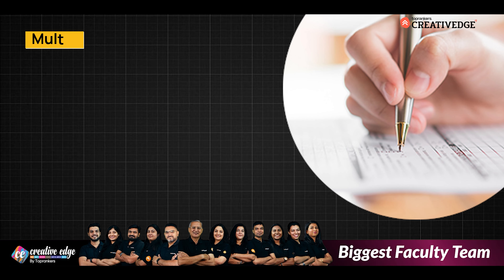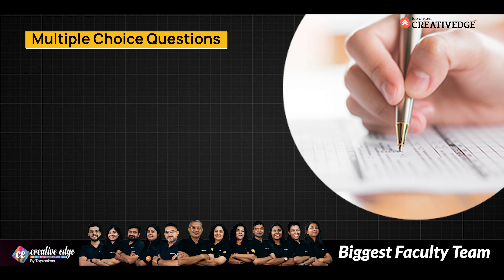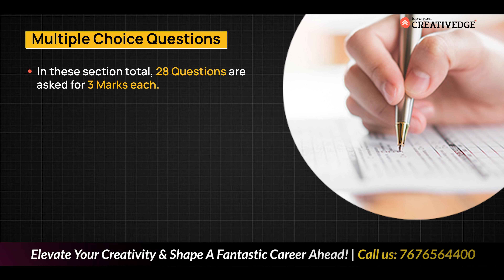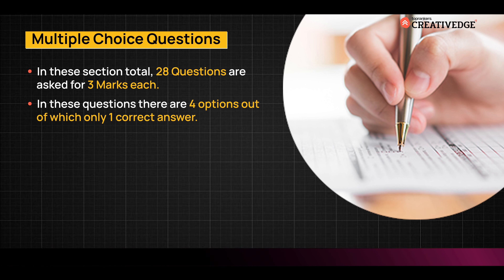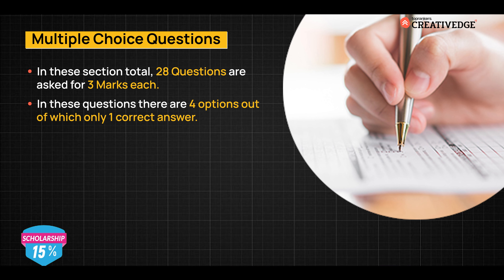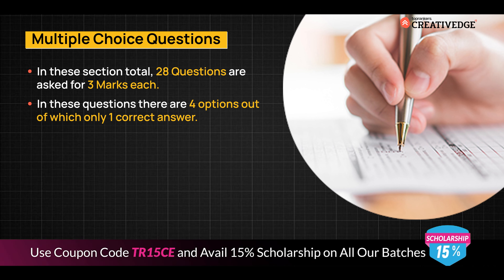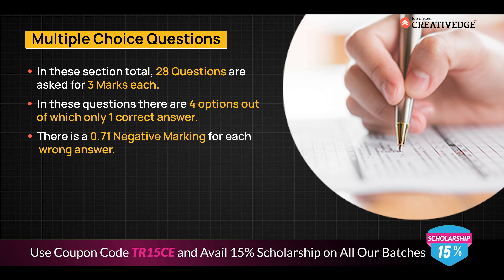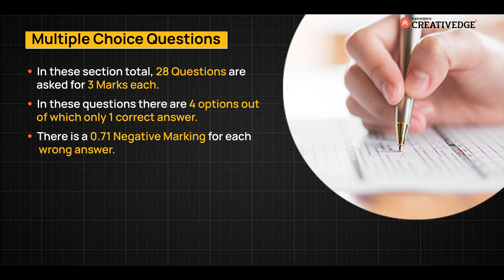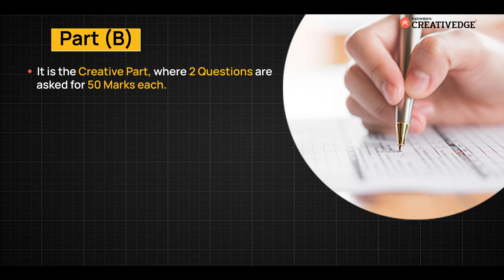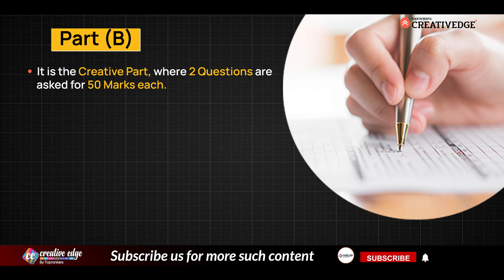Multiple Choice Questions: in this section, a total of 28 questions are asked, each worth three marks. There are four options out of which only one is the correct answer. There is -0.71 negative marking for each wrong answer.